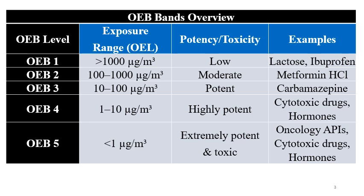OEB5 is the most potent and toxic band, with an exposure limit of less than 1 microgram per cubic meter. Extremely potent compounds fall into this category, including many toxic oncology APIs, cytotoxic drugs, hormones, and other chemical compounds.